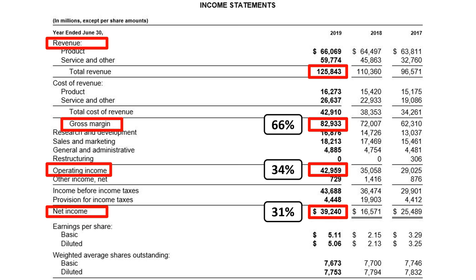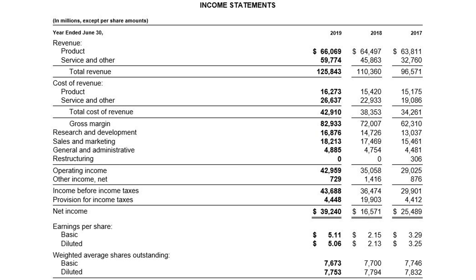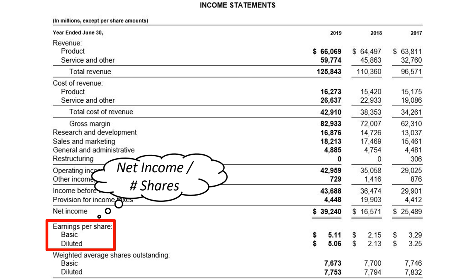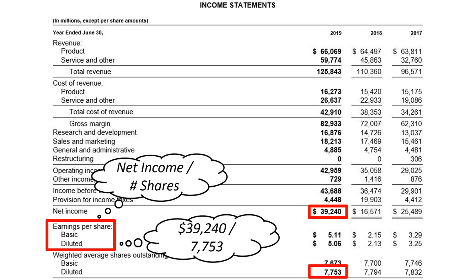Even though we've reached the bottom line, the income statement does have additional important information at the very bottom: earnings per share, or EPS. This is calculated by taking the net income and dividing it by the weighted average number of shares outstanding. Out of the two EPS numbers — basic and diluted — the diluted EPS is the one most commonly looked at. Diluted EPS has a higher share count in the denominator, as it also takes stock-based awards into account. Per share of stock, Microsoft earned $5.06, which is an important input for people that use the price-earnings ratio in estimating the value of a stock.